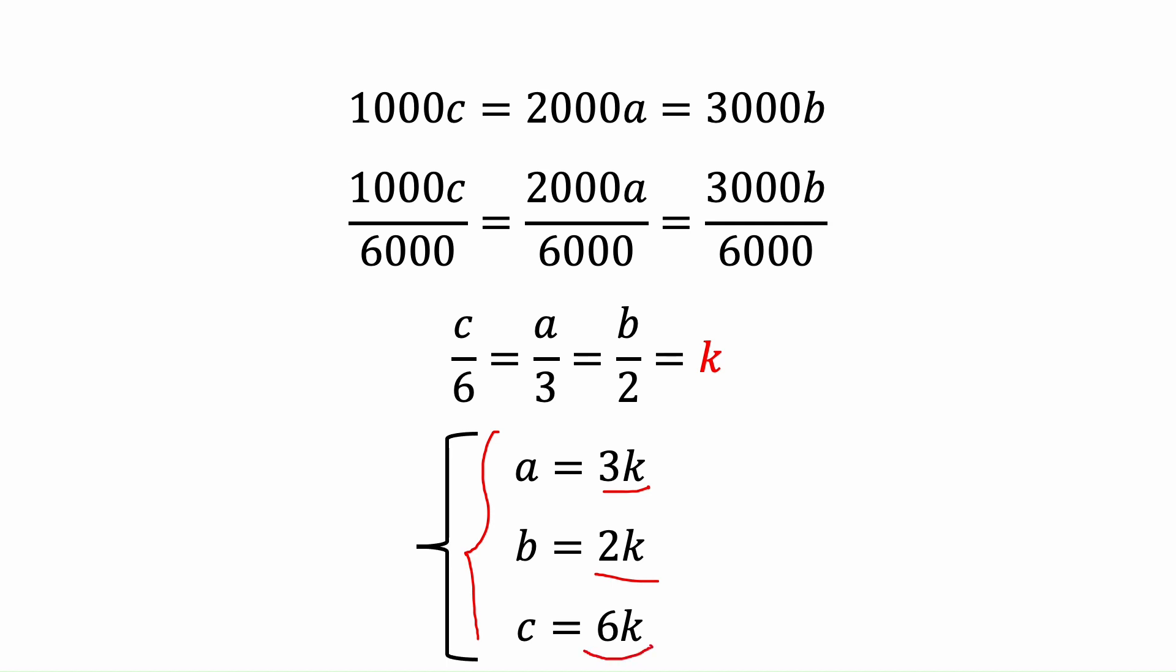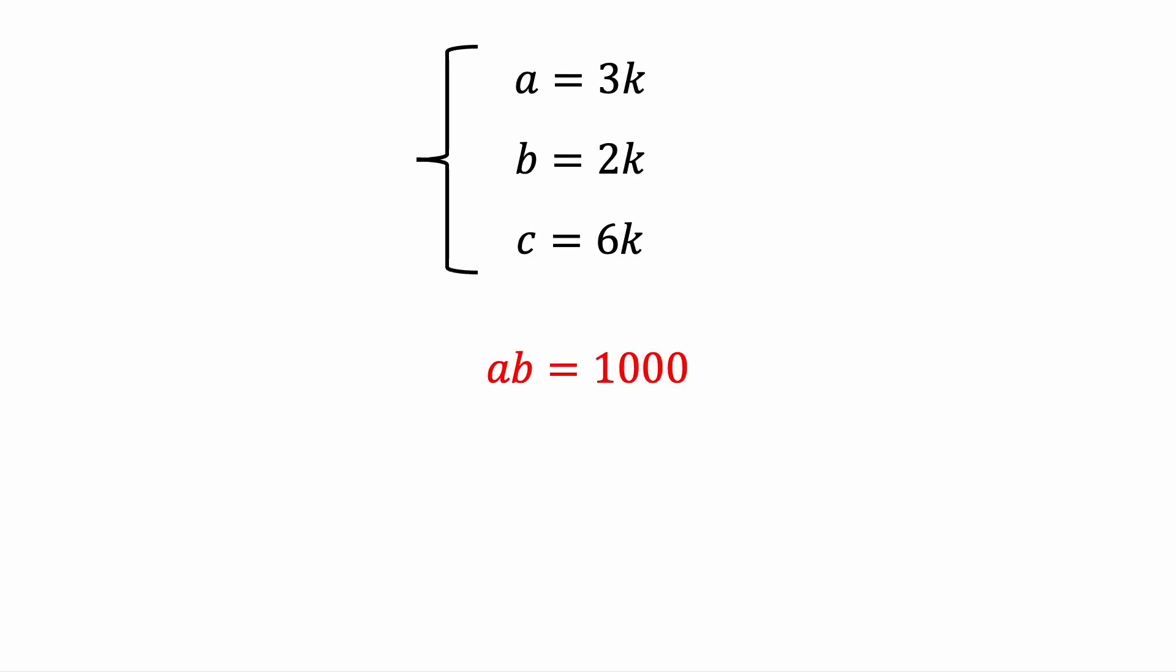If you remember, at the beginning we had three different equations. We can use one of them to find k because we found a, b, and c based on k. So a and b were 3k and 2k, so the multiplication of 2k and 3k will be 6k² equals 1000. So we can find k², which equals 500 over 3.